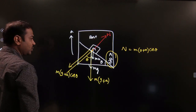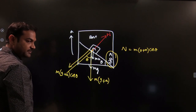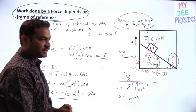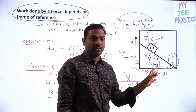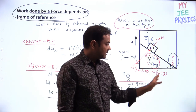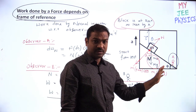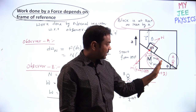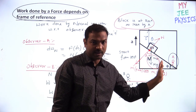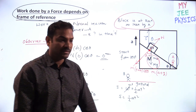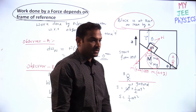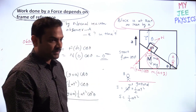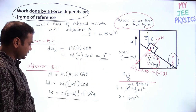While solving the normal reaction, I solved with respect to observer A — that is, with respect to the lift. That is the key point.